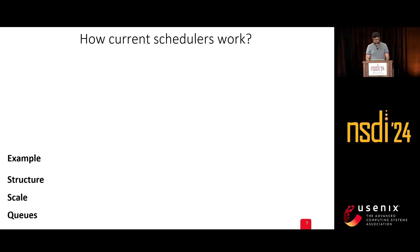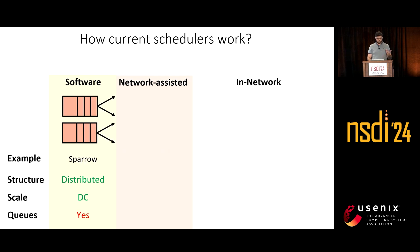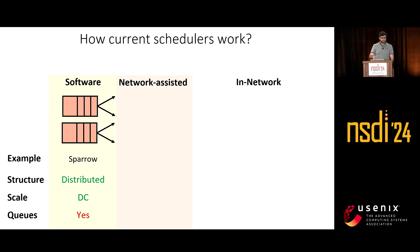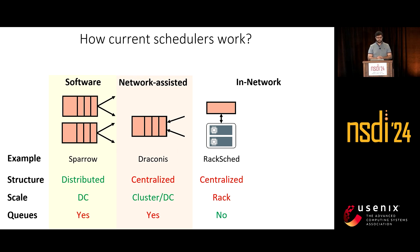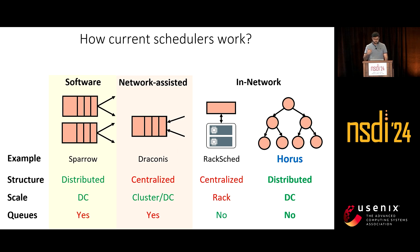Before getting into HORUS, I'll give a few examples of current schedulers. The first type maintains queues of tasks, probes workers, and waits for replies — this takes a lot of time. Other network-assisted systems still require interaction between servers and switch queues. The state-of-the-art in in-network task scheduling is RackSkid, which is centralized, runs only at the rack level, and does not require queues. Unlike all of these, HORUS is distributed, runs at data center scale, and requires no queues at the switches.